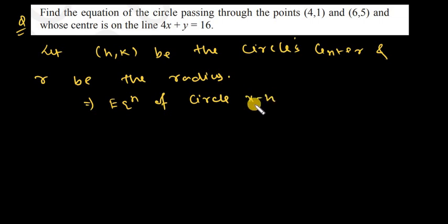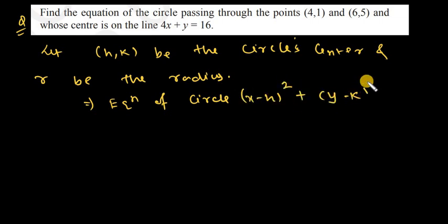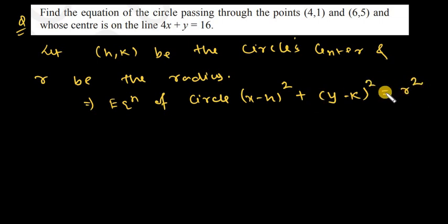The standard equation of a circle is: x minus h whole square plus y minus k whole square is equal to r square, where r is the radius.